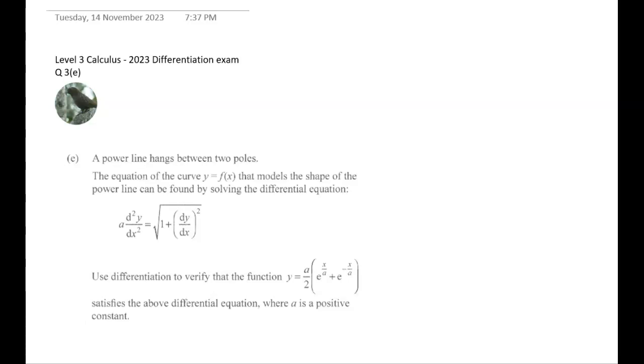Kia ora koutou. This is the first differentiation question that I'm doing from this year's Level 3 differentiation paper. I think it's the easiest of the excellence questions, and I want to get this done before I go off to school. So here it is. It's the one about the power line hanging between two poles.